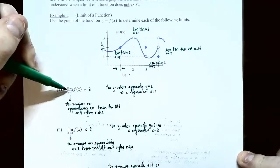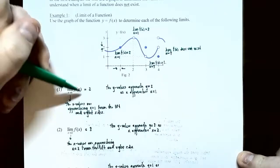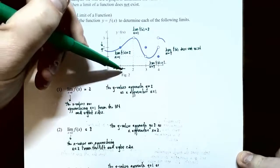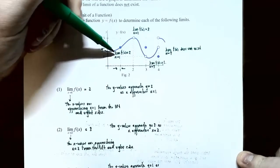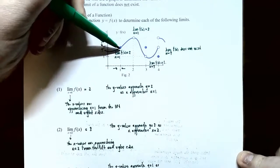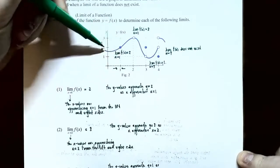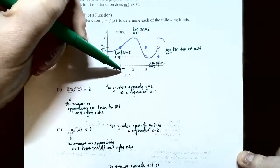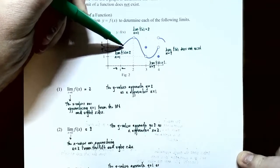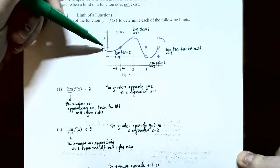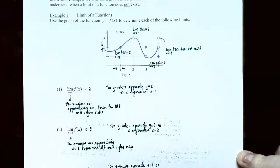Problem one: find the limit as x approaches one. Approaching from the left side, the graph gets closer to a y value of two. Approaching from the right side of x equals one, the y values are still getting close to two. So this limit is equal to two — the y values approach y equals two as the x values approach one from either direction.